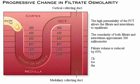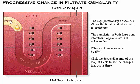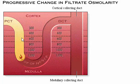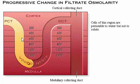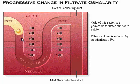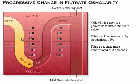Watch the simulated drop of filtrate as it moves down the descending loop of Henle. Notice that the osmolarity of the filtrate increases and the volume decreases. The cells of this region are permeable to water but not to solute. As the filtrate moves down through regions of higher osmolarity, water diffuses out into the interstitium, reducing the filtrate volume by an additional 15%. The solutes remain behind in the tubule and become more concentrated as the filtrate approaches the bottom of the loop.